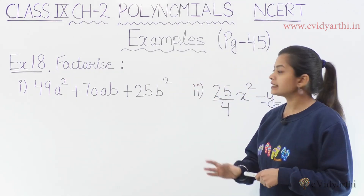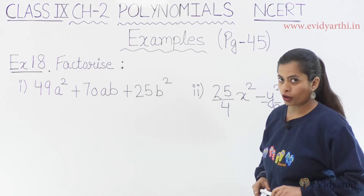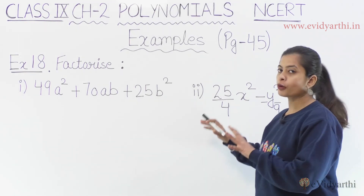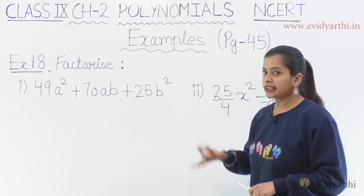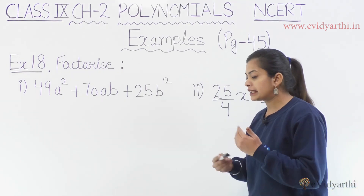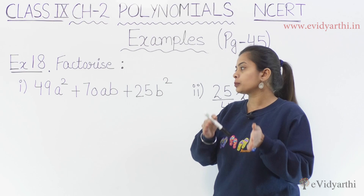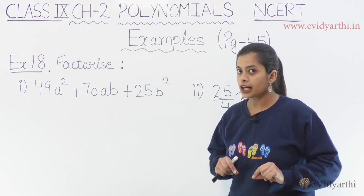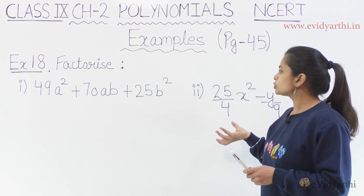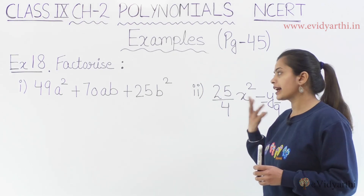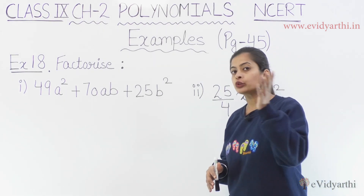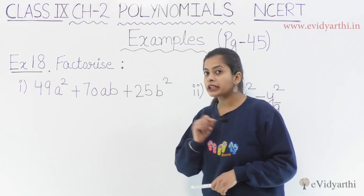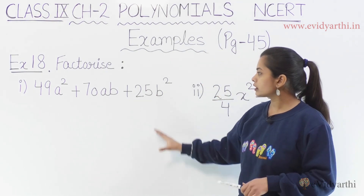We need to factorize two different polynomials. Now we have some polynomials given here, and we need to factorize them. We have seen that our topic is identities, so if I have to factorize any question, I need to use the identities. So let's start with the question.